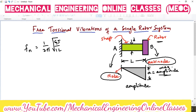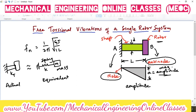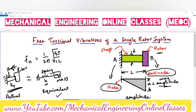This setup is called a single rotor system because there is only one rotor attached to the shaft. If we replace this shaft-rotor system with a spring-mass equivalent, there is a shaft with torsional stiffness KT, replaced by a spring with stiffness K and a mass M.